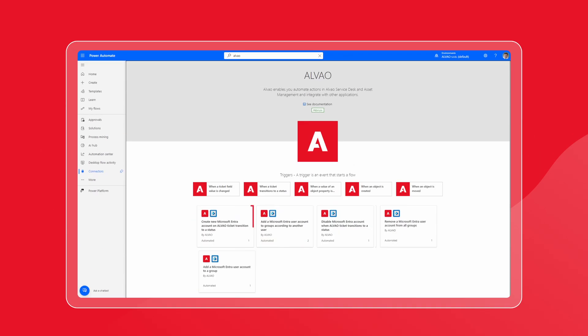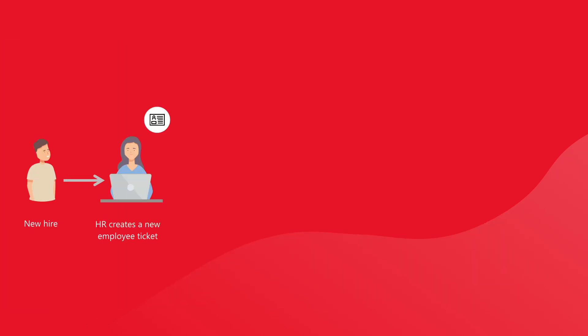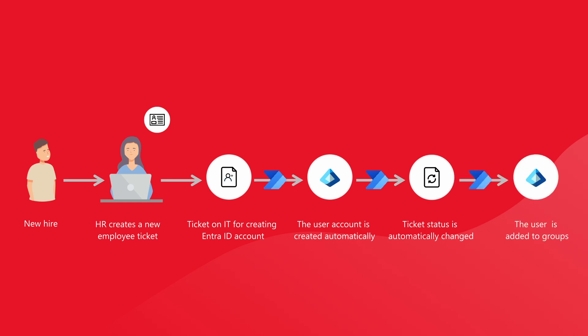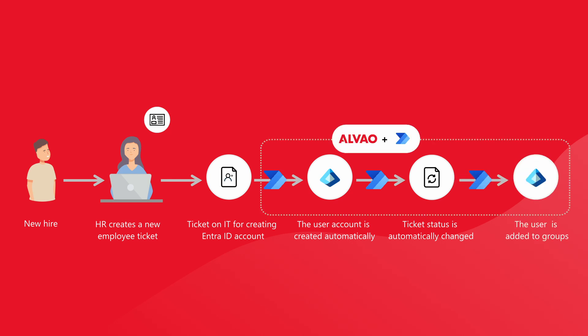Now we will take a closer look at the first two. Here's how it works: when an IT ticket is created, it's automatically routed to EntraID. After creating a user account, the ticket status is automatically updated. The user is then added to the appropriate groups, and these changes are seamlessly synchronized with Alvow.